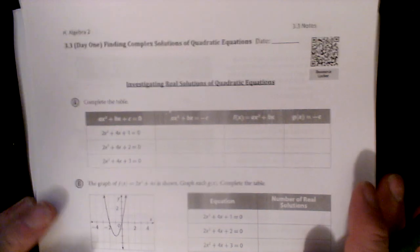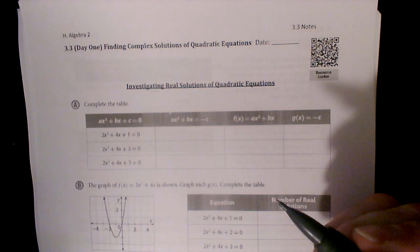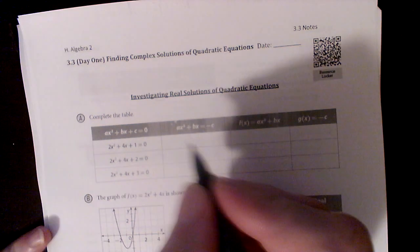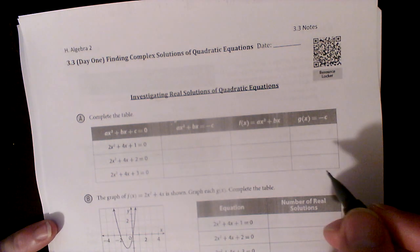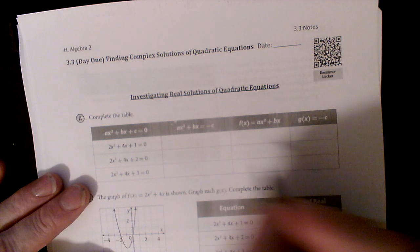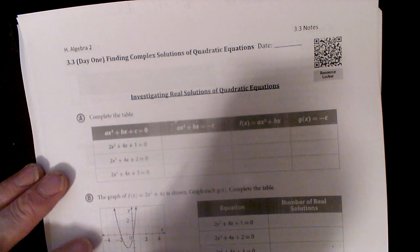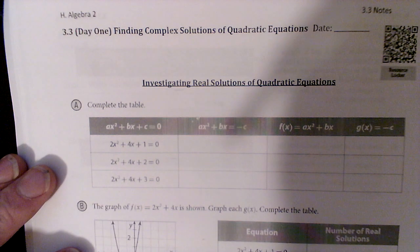All right, we're going to look at some real solutions for quadratic equations. Just like before, we're going to set this up to solve by graphing. To do that, we're going to subtract from the standard form, ax squared plus bx equals c, or equals zero.